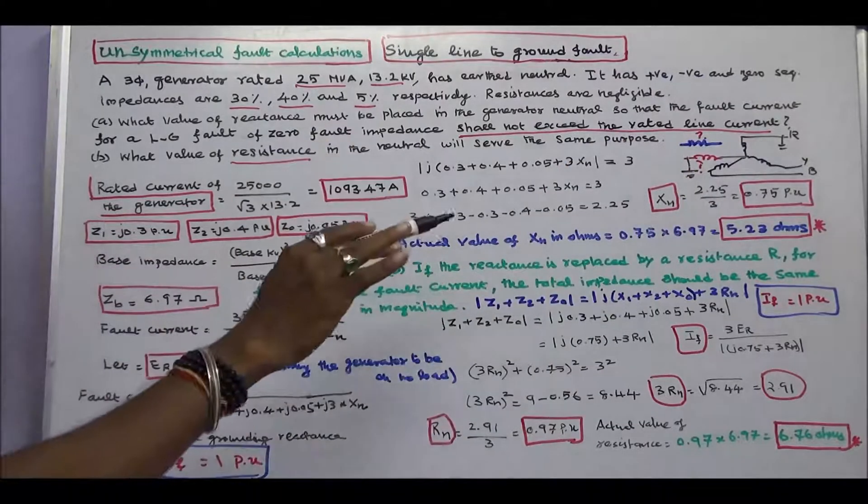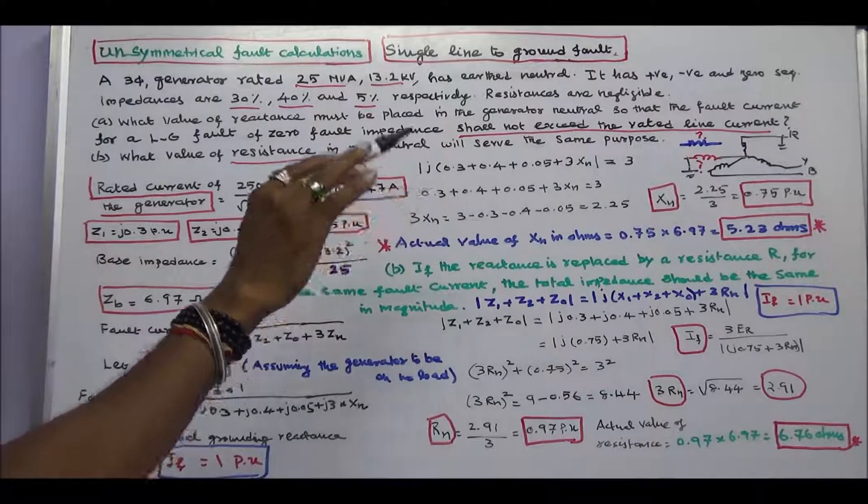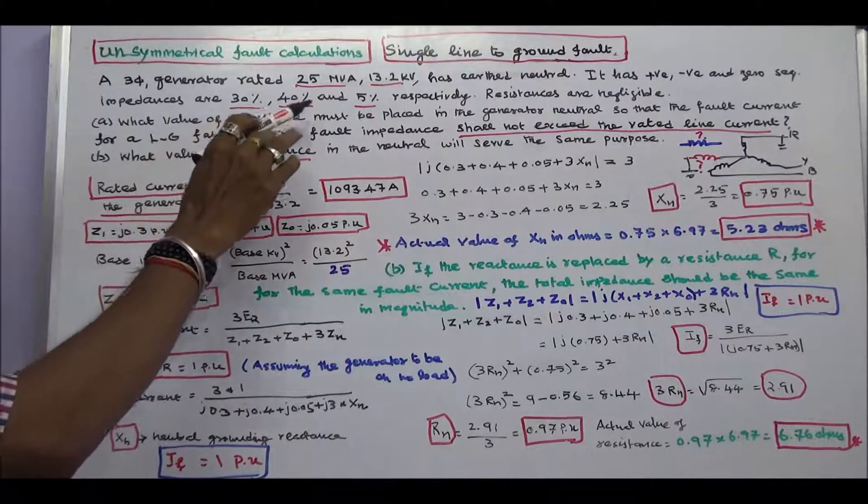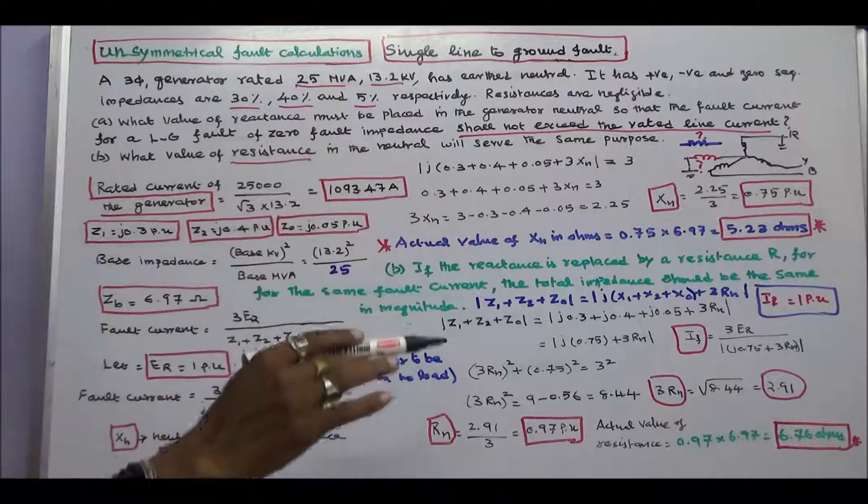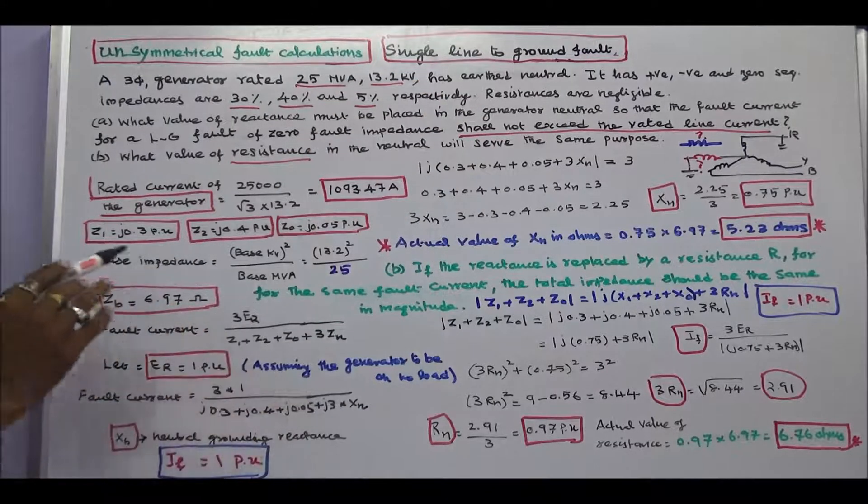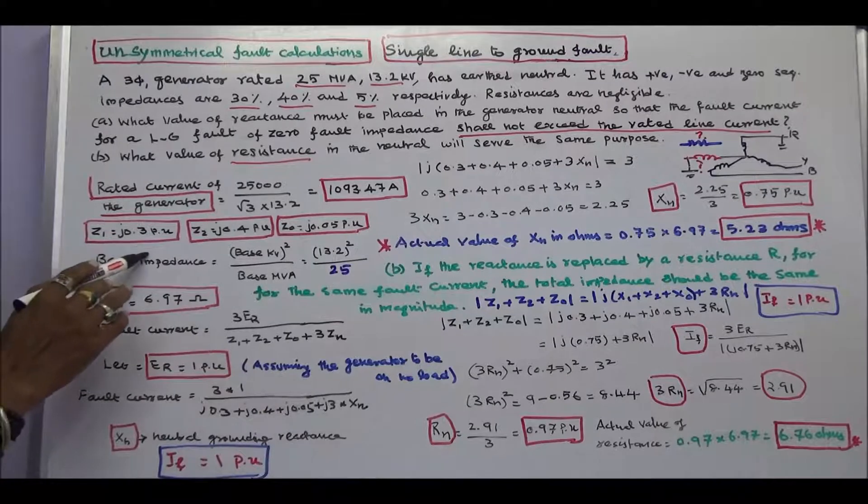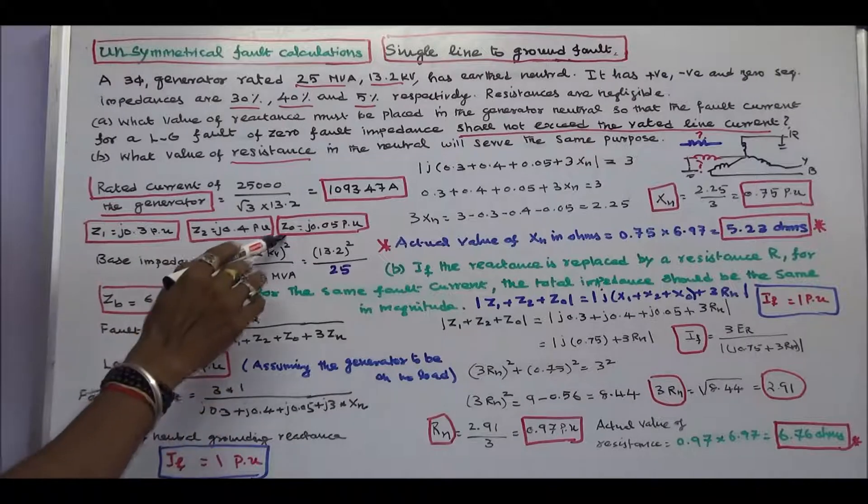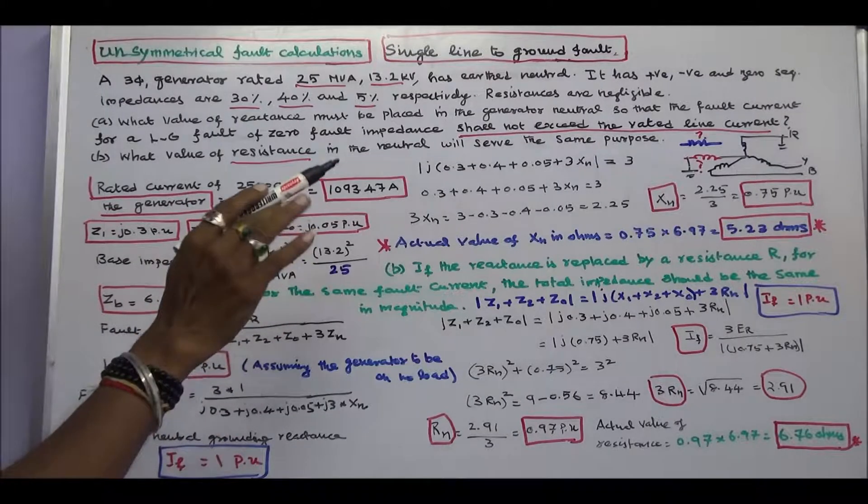It has positive, negative and zero-sequence impedances of 30%, 40% and 5% respectively. Resistances are negligible. That is, Z1 is equal to j0.3 per unit, Z2 is equal to j0.4 per unit, Z0 is equal to j0.05 per unit.